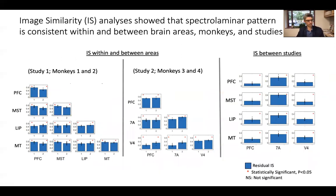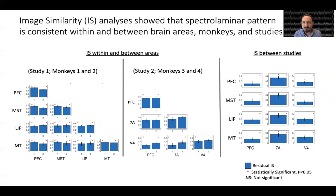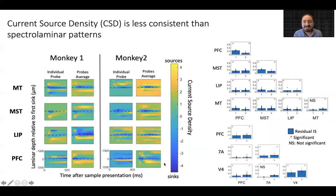Next, we quantified the consistency of the spectral laminar pattern by computing image similarity between the spectral laminar images from different probe recordings within and across brain areas, monkeys, and studies. High image similarity values were observed for most comparisons and all values were significantly greater than expected by chance. These results suggest that the spectral laminar pattern is ubiquitous across cortical areas and monkeys and robust to differences between studies. We then compared the consistency of CSD patterns across probe recordings to that of spectral laminar patterns, obtaining CSD for all individual probe recordings and their area averages. For all comparisons within and between areas, monkeys, and studies, image similarity was drastically lower between CSD images than spectral laminar images.